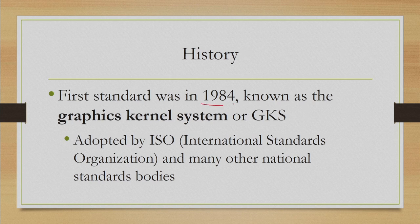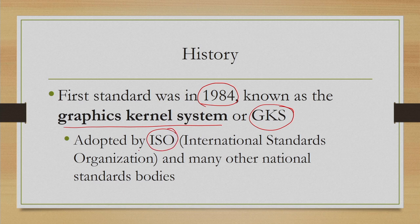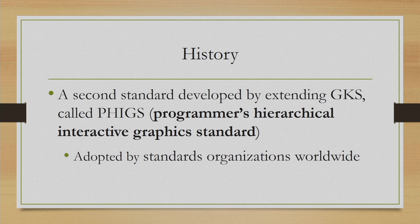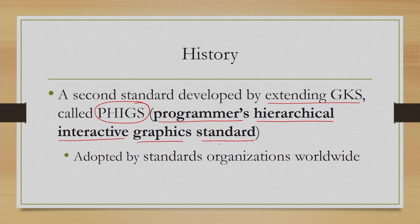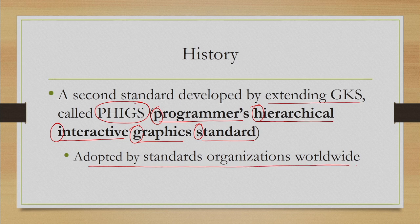The first graphics standard came in 1984, known as the Graphics Kernel System or GKS. It was adopted by ISO as well as many other national standard bodies. Then came a second standard developed by extending GKS, called PHIGS, which stands for Programmer's Hierarchical Interactive Graphics Standard. It was then adopted by standards organizations worldwide.